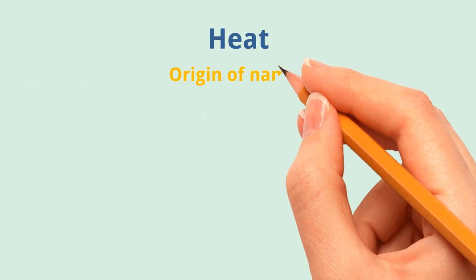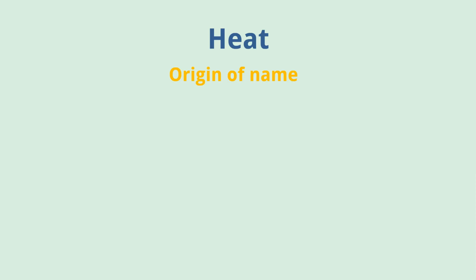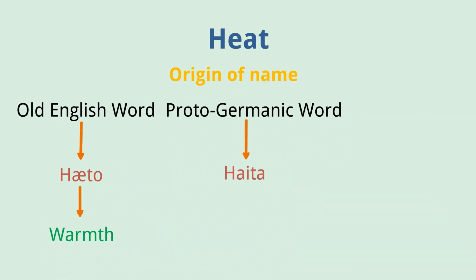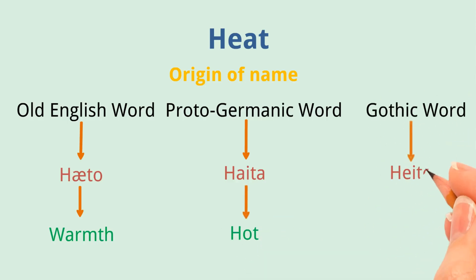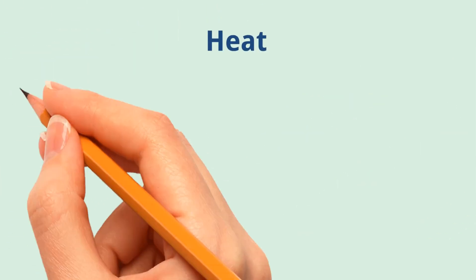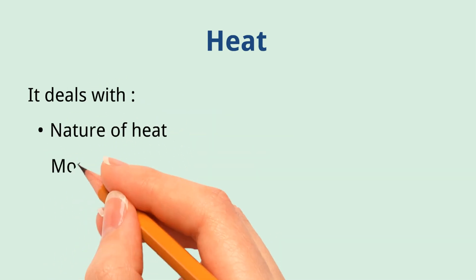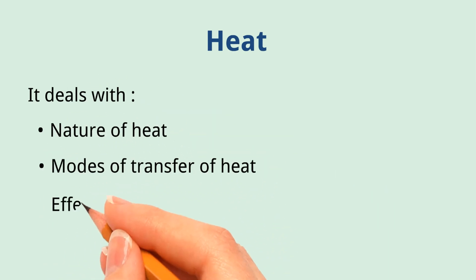Heat. Origin of name: As far as the origin of the word heat is concerned, etymologists have different opinions. Some believe it is derived from an old English word 'heto', meaning warmth. Others think it comes from the proto-Germanic word 'heto', meaning hot. Few believe it originated from the Gothic word 'heto', meaning fever. It deals with the nature of heat, modes of transfer of heat, and effects of heat.